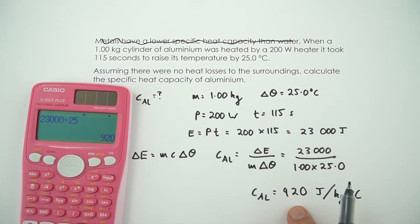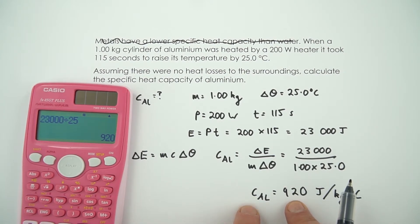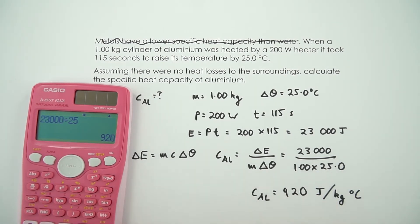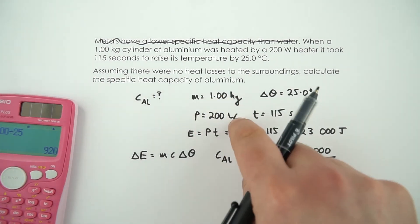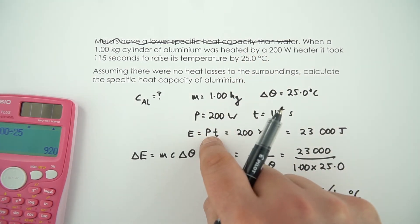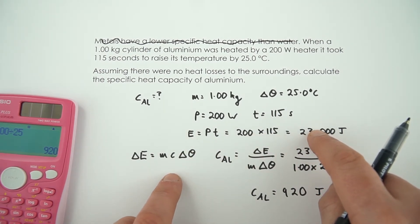So it is true that aluminum has a lower specific heat capacity than water. Water is about 4,200. And metals have a lower value, which actually often means that metals will heat up quicker than things like water. So a lot to this question, but basically I identified from the question the important bits of information. I used an intermediate equation to actually work out the energy transferred. And then I used that to find at the end the specific heat capacity of aluminum.